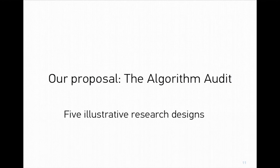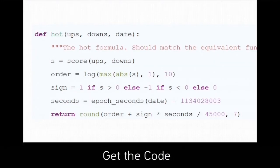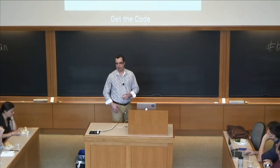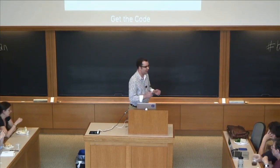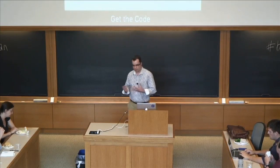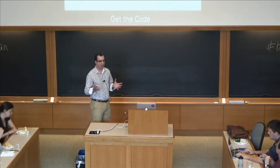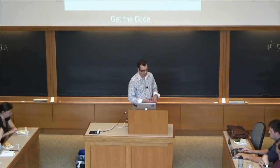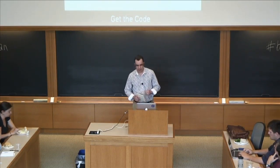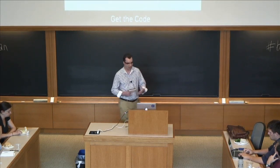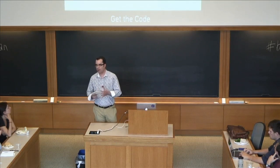Someone suggested we should just get platforms to tell us what the algorithm is — that would solve the problem. Pasquale is most associated with this idea. But when you think about it more, what would you actually do with that information? Let's say I had in my pocket the Google search results algorithm — what would that look like? First, it changes all the time. If it were code, it would be quite lengthy. We might agree on what certain parts of the algorithm are doing, but we wouldn't necessarily be able to use the algorithm to predict a particular outcome without data about what kinds of things were fed into it. Having the algorithm public is not necessarily the answer.